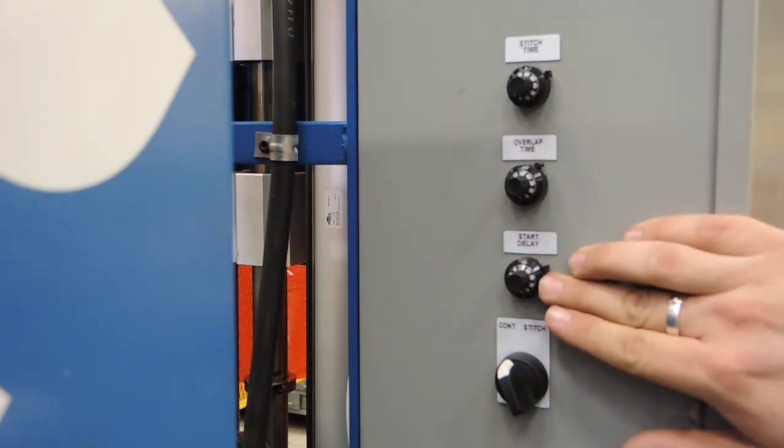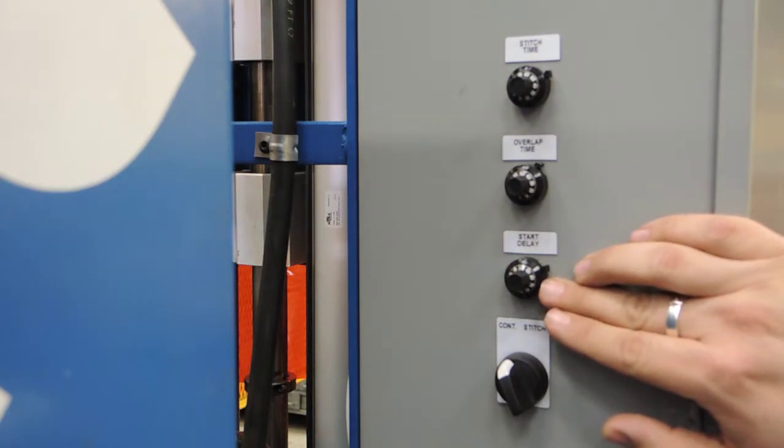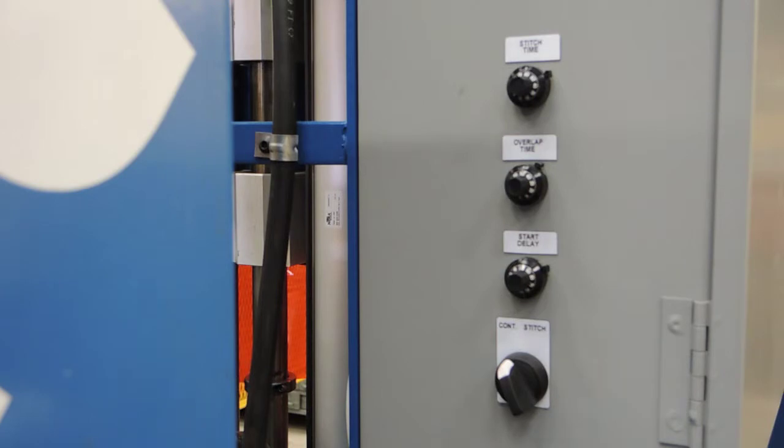Start delay is the amount of time the torch remains stationary while it is still on to develop a puddle before rotation is started. And the switch at the bottom switches from continuous mode to stitch mode. And again, stitch mode is set for four welds 90 degrees apart.